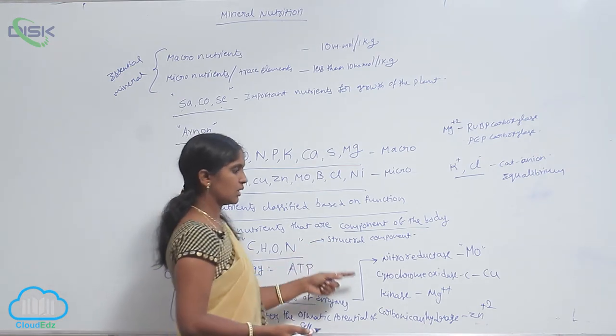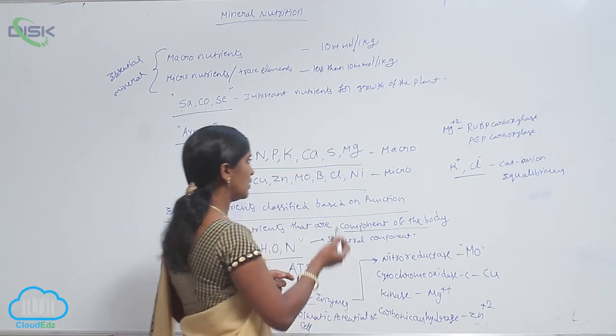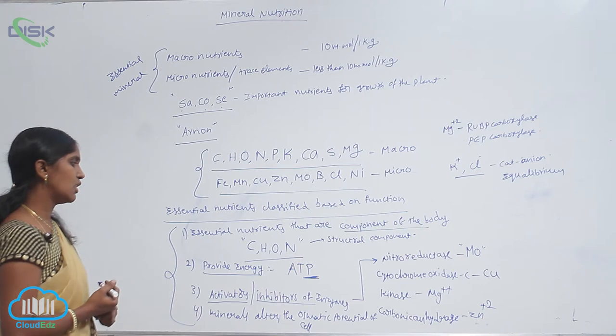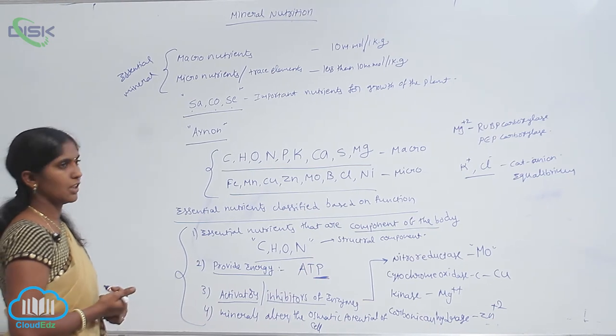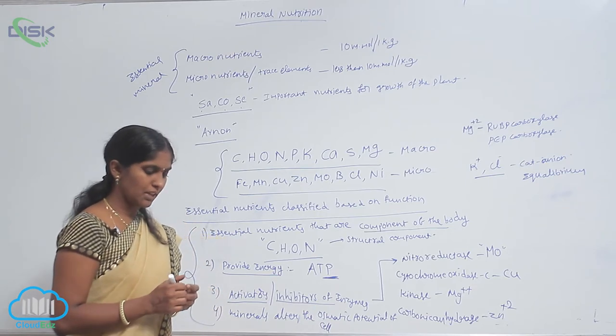So here we see many enzyme activators: MO, copper, Zn plus 2, Mg plus 2, and the essential nutrients which alter the osmotic potential of the cell. They are K plus ion and Cl minus ion.